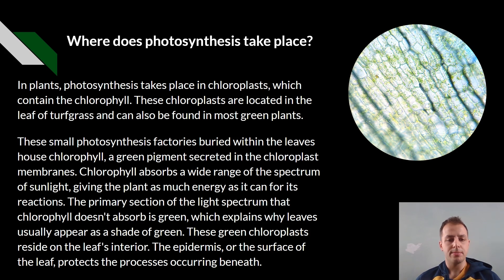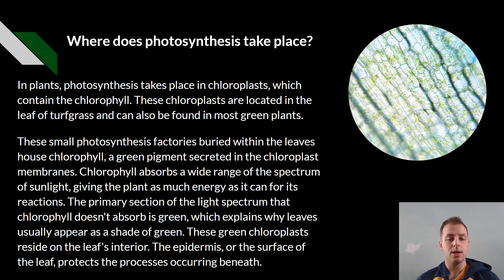Chlorophyll is a green pigment secreted in the chloroplast membranes. The chlorophyll absorbs a wide range of the light spectrum, giving the plant as much energy as it can for the reactions. The primary section of the light spectrum that chlorophyll does not absorb is green, which explains why leaves usually appear in shades of green.